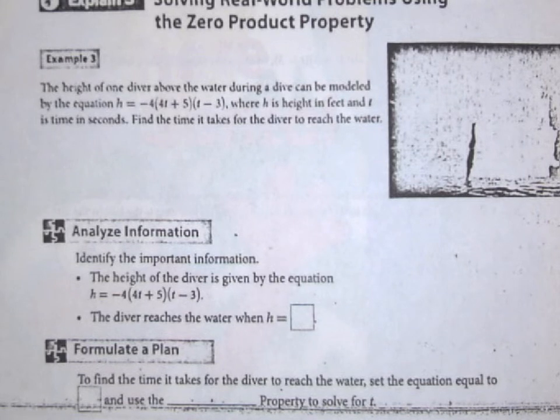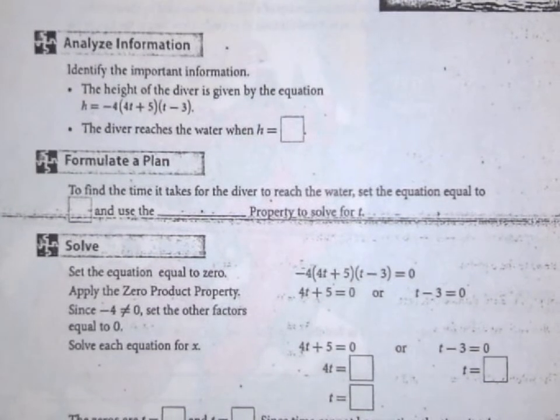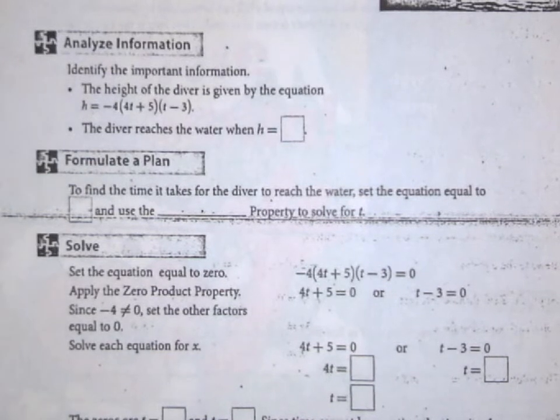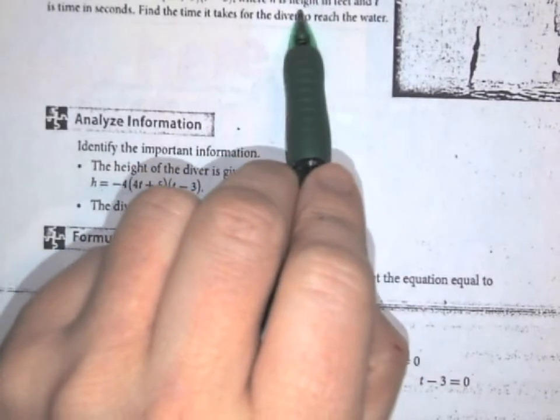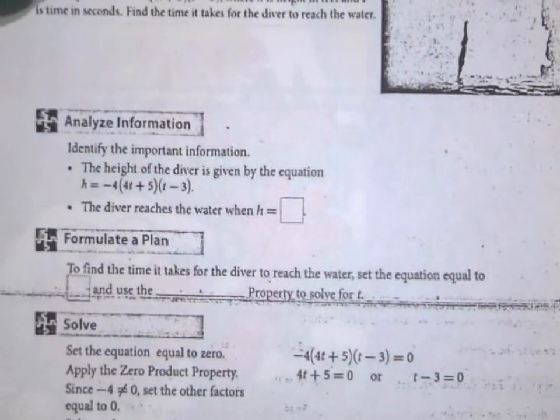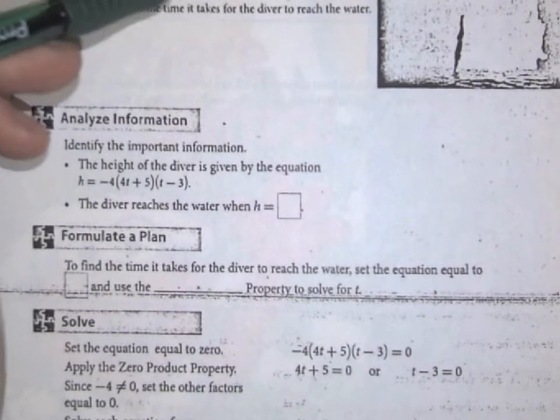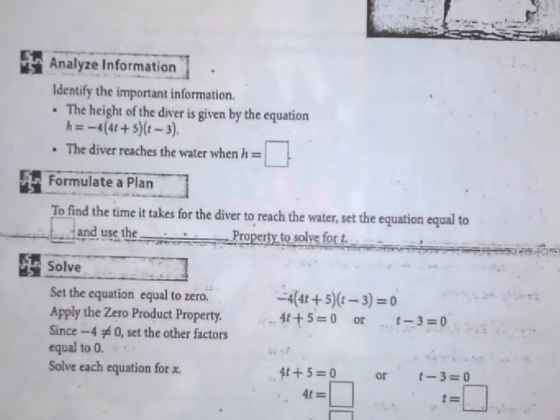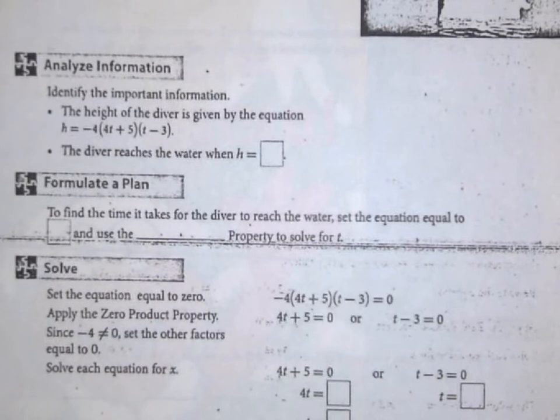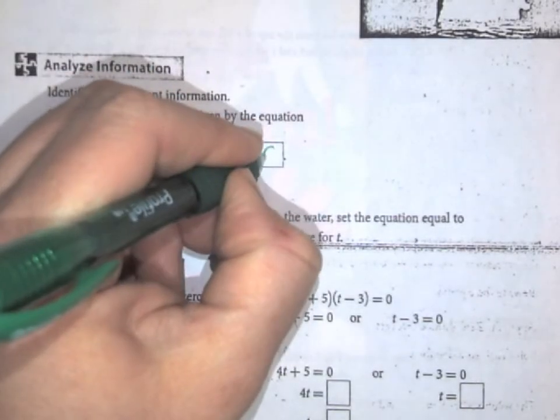First, we have to identify our important information. It gives us the equation for the height of the diver. When the diver reaches the water, you think about what is that value. This is talking about the height in feet, and that's where they start out above the water. So the height when the diver reaches the water is when h equals zero, because then they're no longer above the water.